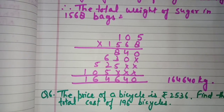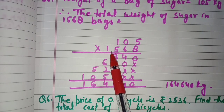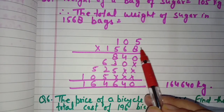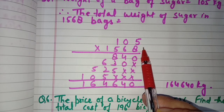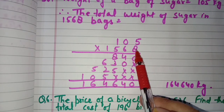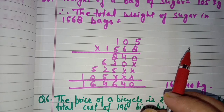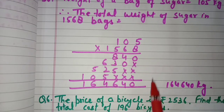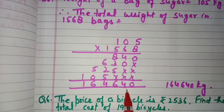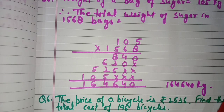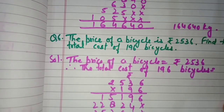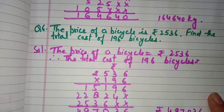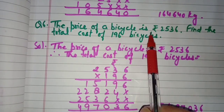Therefore, total weight of sugar in 1568 bags — we multiply 105 by 1568. We can change the order of numbers using the order property; if we change the order the product remains the same. After multiplication, we get 1,64,640 kg. So the total weight of sugar in 1568 bags is 1,64,640 kg.